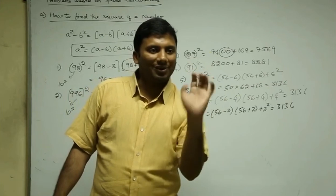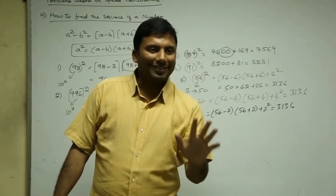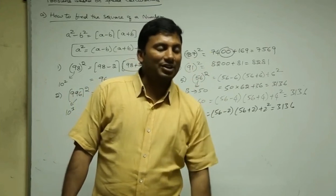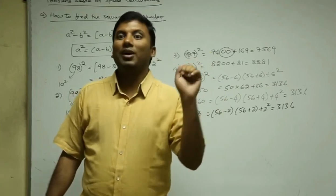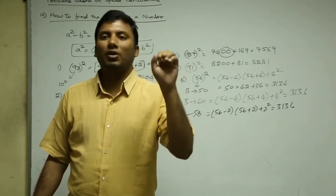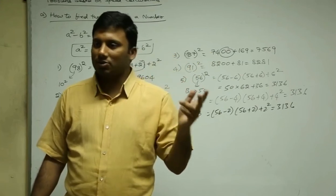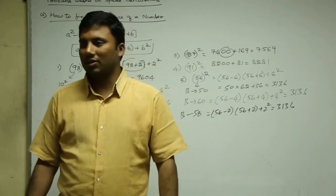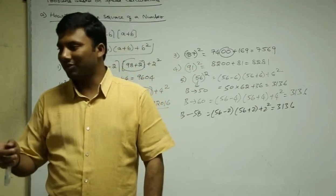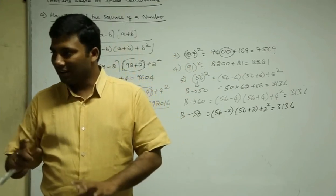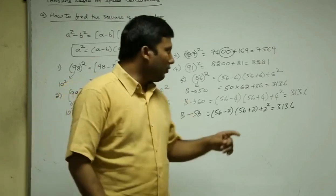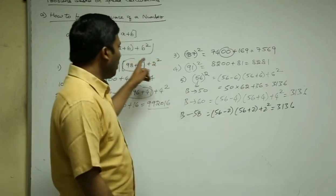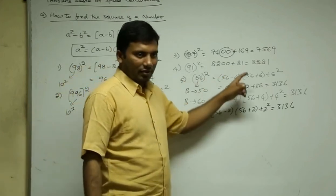Now, 112²: 112 is nearest to 100. So: (112 - 12)(112 + 12) + 12² = 100 × 124 + 144 = 12400 + 144 = 12544. Are you all with me? Now we have found out the answer.